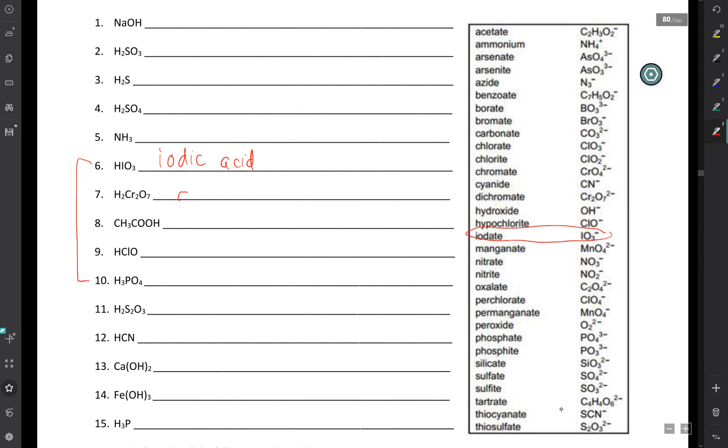Alright, number 7 is called dichromic acid. I'm going to come back to number 8. Number 9 is hypochlorous acid. Number 10 is phosphoric acid.